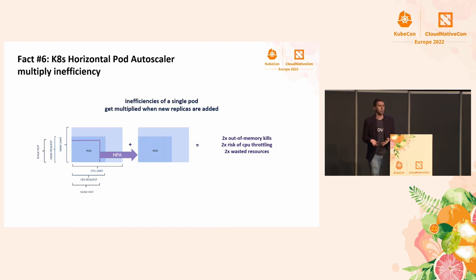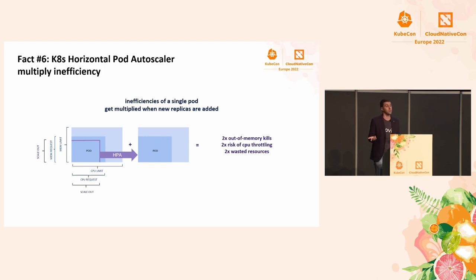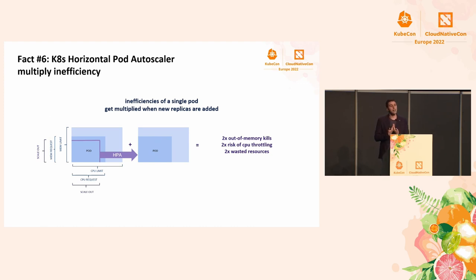We also have HPA, the horizontal pod autoscaler. In this example, we show a situation where HPA scales out when specific memory or CPU consumption thresholds are met. As a result, from one pod, we get two identical pods that provide the same service. This is great — we have two times the resources to compute the service. What could possibly go wrong? Well, things may go wrong, because if you didn't properly set your memory limit — for example, you undersized it — you will simply get twice the out-of-memory kills you had before. Also, if you set your CPU limits too high, but your pod can't find such resources, this directly impacts your service latency because of throttling. And if you over-provision to play safe, everything works functionally, but at what cost? You may be wasting two times the resources you were wasting before the scale-out if your pod isn't tuned properly.